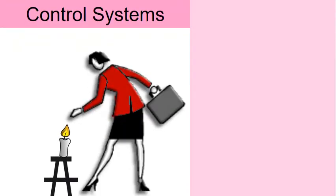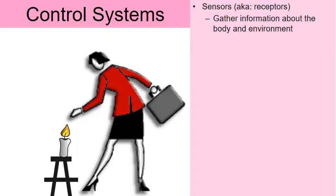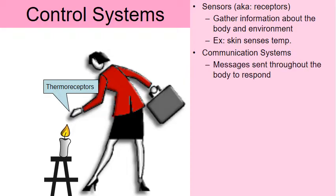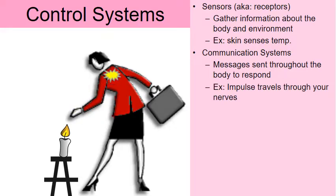Let's talk about the control systems in place to maintain our homeostatic levels. We begin with the sensors, or receptors. What they do is gather information about the body and the environment. In this example, in the skin of the woman's fingers are thermoreceptors — these are heat receptors. Notice she's getting too close to a candle, and so the heat is going to activate her communication systems.